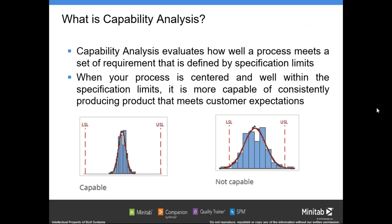What is a capability analysis? Capability analysis evaluates how well a process meets a set of requirements defined by specification limits. When your process is centered and well within the lower and upper specification limits, it is more capable of consistently producing products that meet customer expectations. If your process is outside either the lower or upper specification limit, we consider the process not capable.